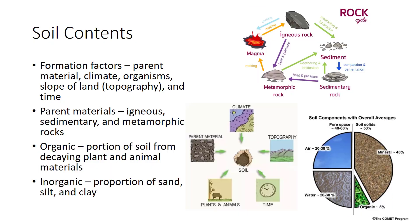Soil is composed of rocks, minerals, organic matter, air, and water. In addition to its composition, the soil's structure and profile are also key to plant growth and development. The top few inches of the earth's surface consist of minerals obtained from weathered rock, air, water, and organic matter. Basically, five different factors are involved in the formation of soil: parent material, climate, types of organisms, slope of the land, and time.